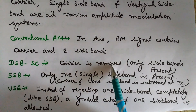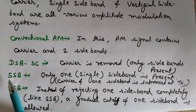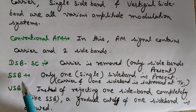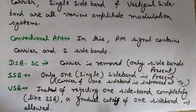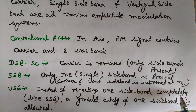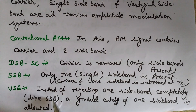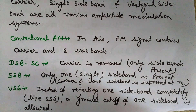The third type is SSB, single sideband — it has no carrier and only one sideband, with the other sideband suppressed and removed at transmission. The fourth is VSB, vestigial sideband — instead of rejecting one sideband completely as in SSB, a gradual cutoff of one sideband is allowed, so the sideband is not removed completely.